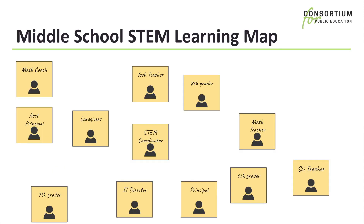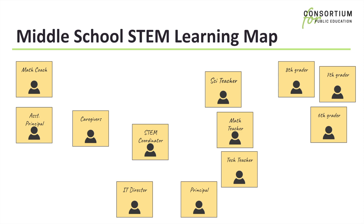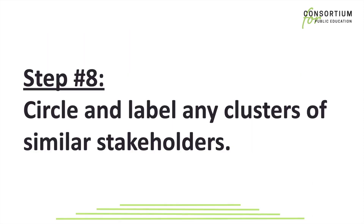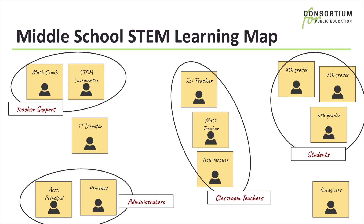So, in this scenario, we cluster the students together, the teachers, and the administrators and coaches. Step 8: Circle and label any clusters of similar stakeholders. You don't have to put every stakeholder into a group — it's okay to have outliers and singular stakeholders. And once every stakeholder is grouped, add a group label.